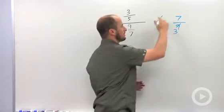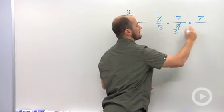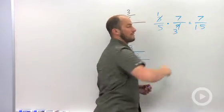And then just multiply across. So this turns into a 1. 1 times 7 is 7, 5 times 3 is 15.